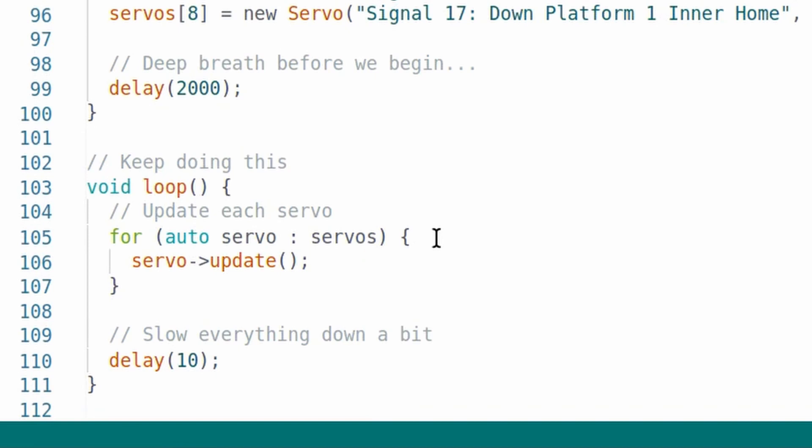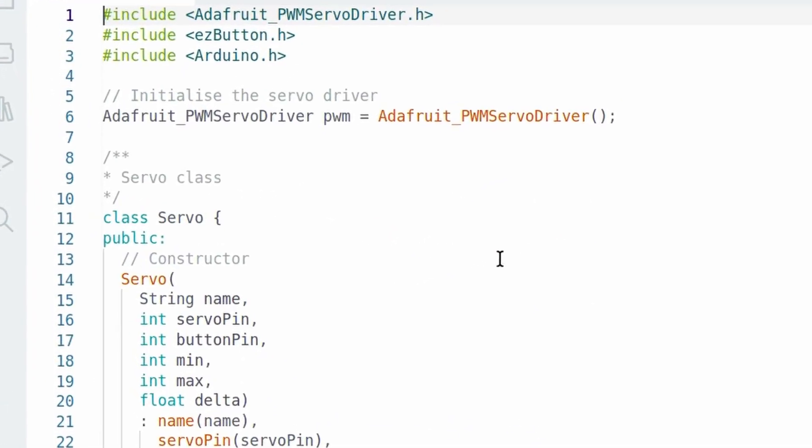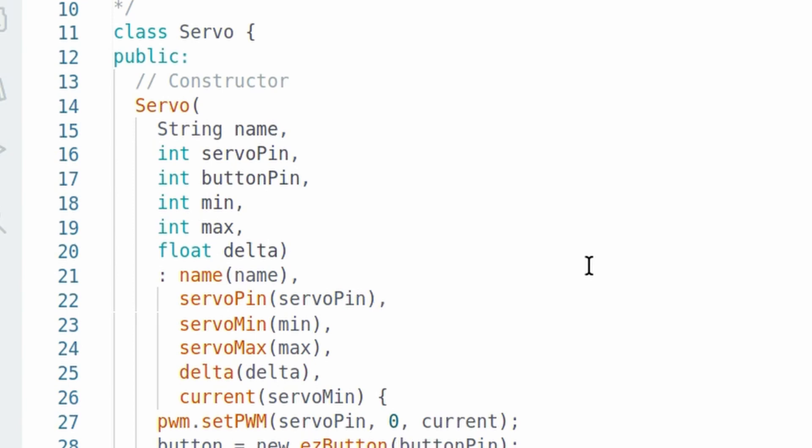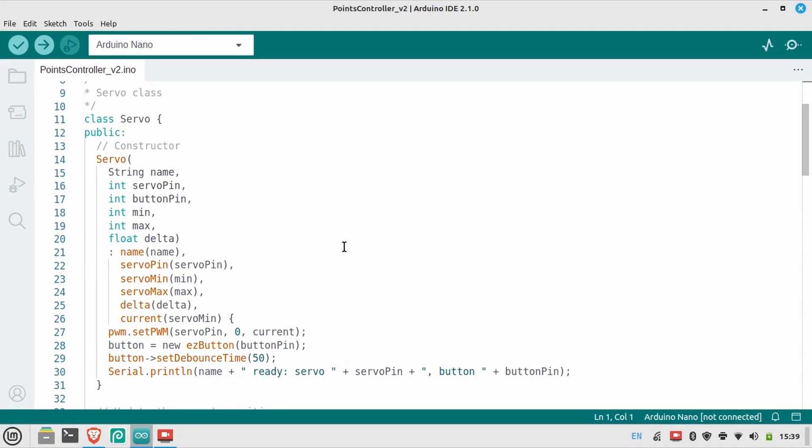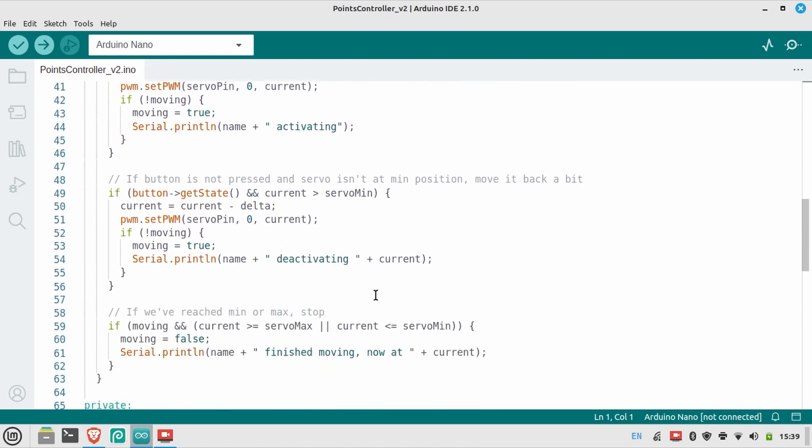But hang on, I hear you shouting at your screen. What is that magical servo object anyway? Well, that's defined up here. This is a custom class I've written to encapsulate all the servo and button related stuff. It's just a neat way of making sure the code is easily reusable without too much copying and pasting. We've got a constructor method here, which takes all of that information we gave it down in the setup function, and stores it all inside the object ready to be used. Then, in the update method, which is what gets called each time we go through the loop, we check the position of the associated button, or switch in my case, compare it against the current stored position of the servo, and either increase or decrease it by a certain amount. And the bigger the value of delta is, the faster the servo will move, and vice versa. Now, if you're not into coding, just accept that it's magic and move on.